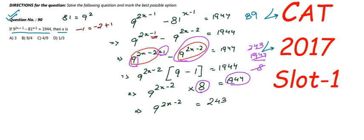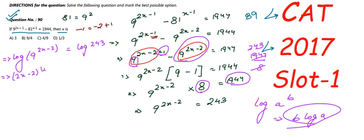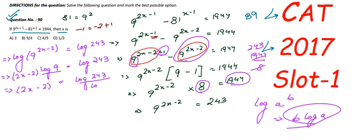1944 divided by 8 gives 243, so we have 9^(2x−2) equals 243. To find x, we use logarithms. Applying log to both sides: log of 9^(2x−2) equals log of 243. Using the rule log(a^b) = b·log(a), this becomes (2x−2)·log 9 equals log 243. Dividing both sides by log 9, we get 2x−2 equals log 243 divided by log 9.